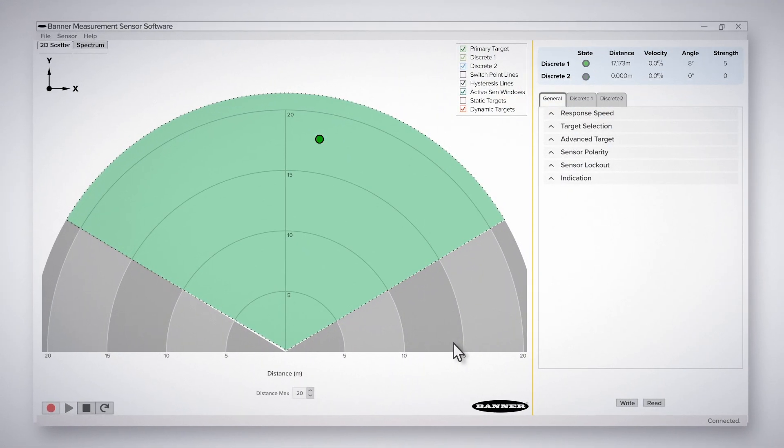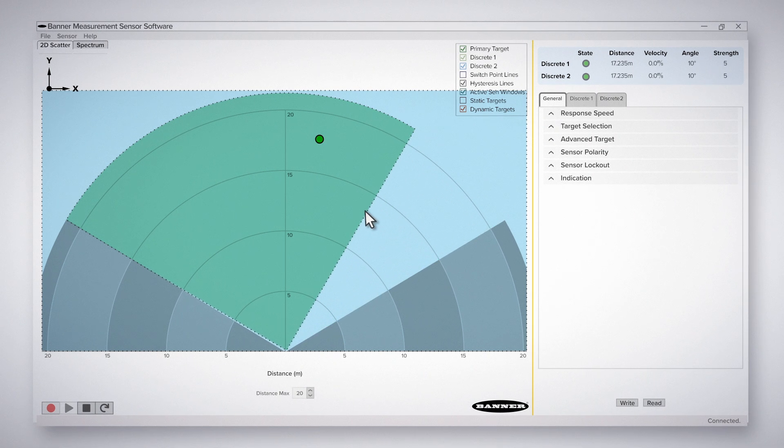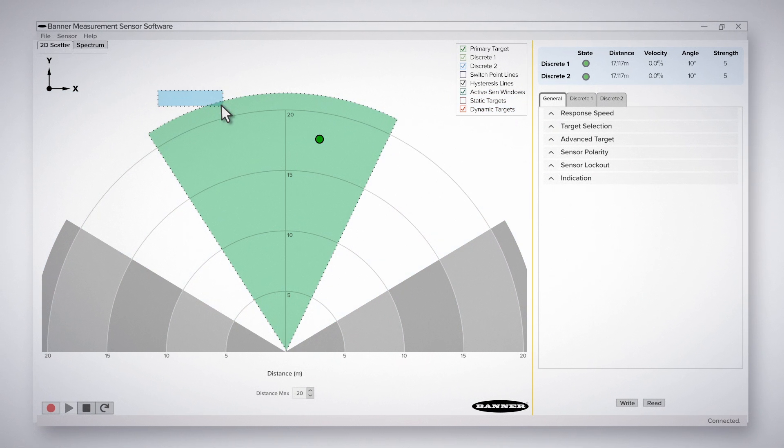And third, our user-friendly drag-and-drop software can manipulate the Q90R2's overall coverage area into independent detection zones, configurable as angular or rectangular windows.